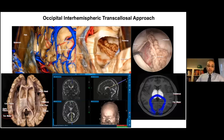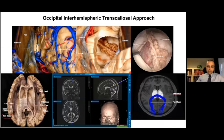The occipital interhemispheric approach allows access to the posterior superior aspects of the thalamus. Following the precuneus, cuneus, and parietooccipital sulcus, the splenium of the corpus callosum is reached under the inferior sagittal sinus. After splenium incision, the atrium of the lateral ventricle is reached and the crus of the fornix can be visualized. After entering the ventricle, the bulb of the corpus callosum and calcarine sulcus can be seen medially, while Region 4a and the choroid plexus are observed on the anterior wall. This approach requires considerable splenial resection and risks visual deficits from retraction of visual cortex around the calcarine sulcus.